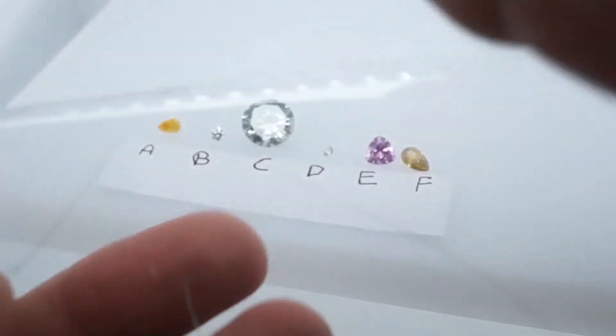So C passes a scratch test as well. You can see deep scratches in there. Scratch is from C right there.